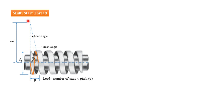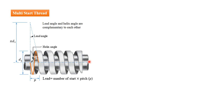In one complete rotation, the travel along the circumference is π×d1, where d1 is the major diameter. The helix angle is the angle formed by this travel, measured along the axis of the threaded fastener.